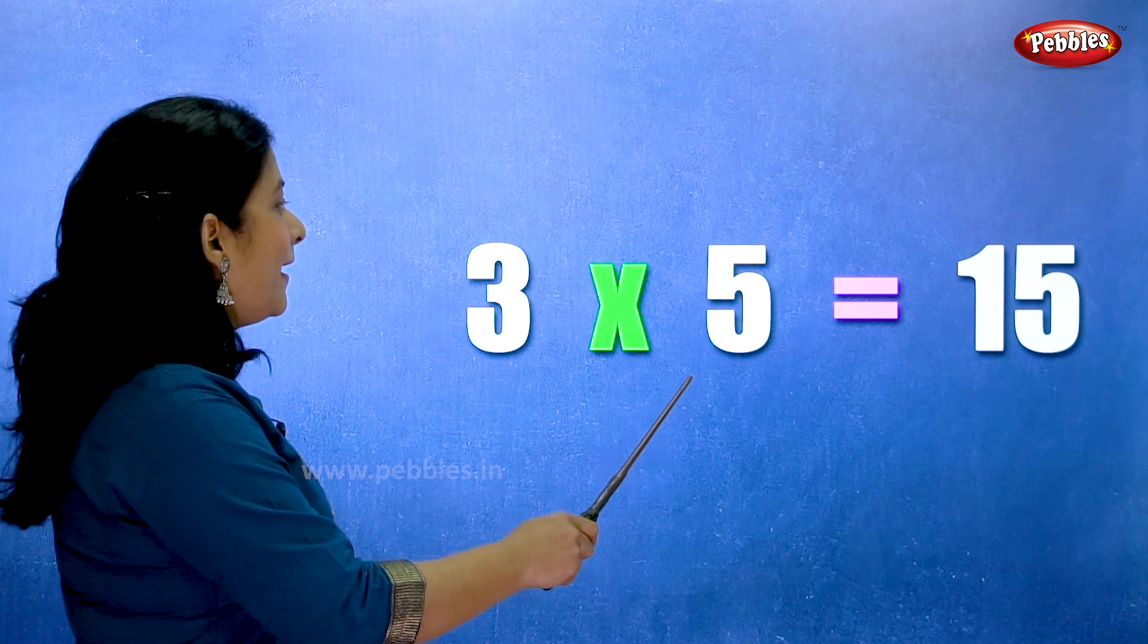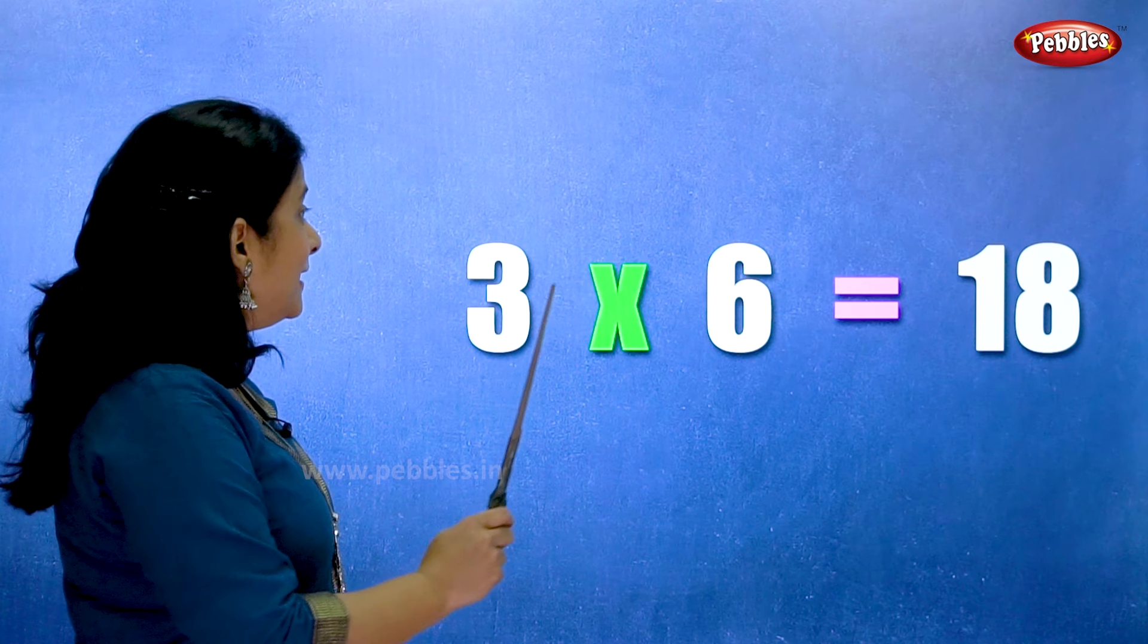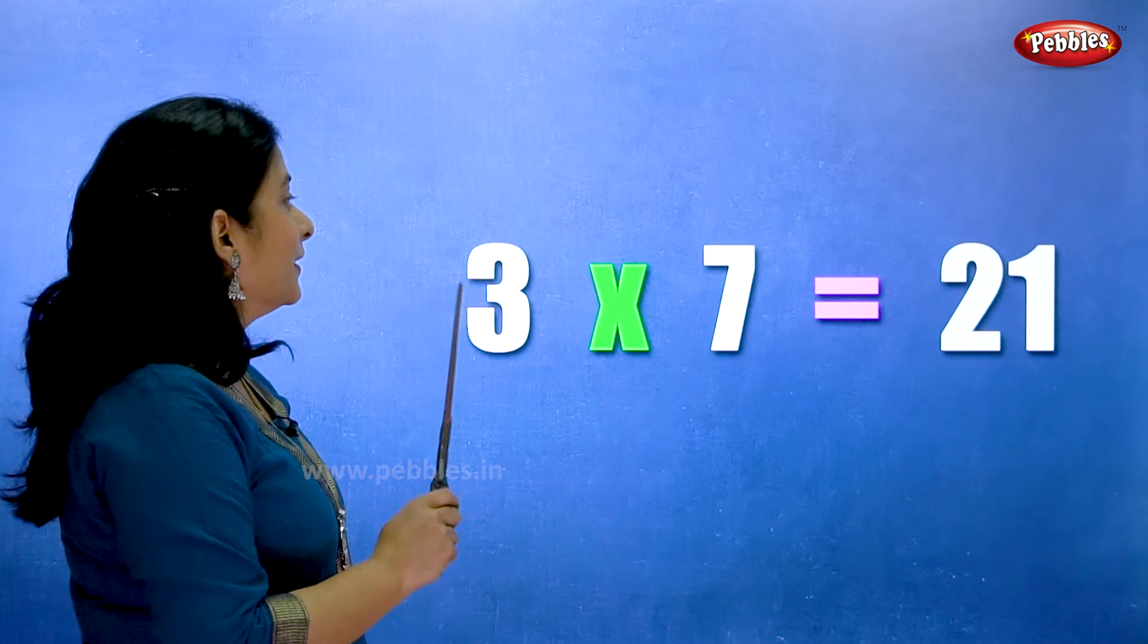Three fives are fifteen. Three sixes are eighteen.